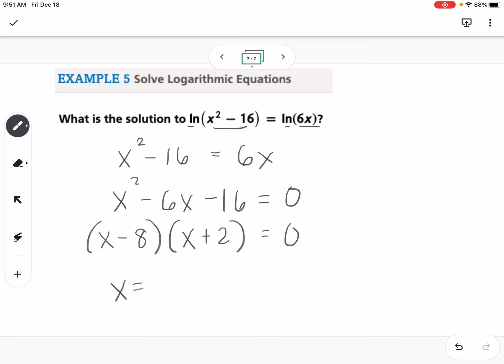That would mean our solutions would be 8 and negative 2, but what we have to remember is that we can't take the log of a negative number. If I plug in 8, I'm not going to have a problem on either side of the equation. But if I plug in negative 2, it's going to cause me to take the log of a negative number, which I can't do. So negative 2 is extraneous. So 8 is our only solution.